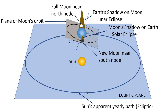Secondly, for an eclipse to take place, it has to be a New Moon or Full Moon — Amavasya and Purnima. This phenomenon occurs only when the Full Moon or New Moon is appreciably close to either the North Node or the South Node. This exact situation is shown on the screen.